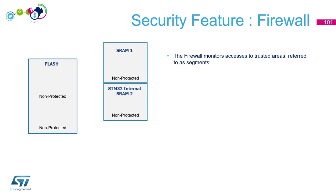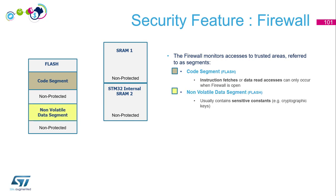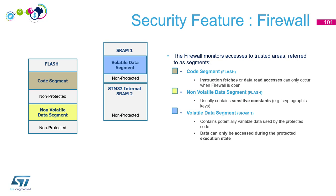The firewall monitors access to a trusted area that refers to segments — there are three of them. A code segment located in flash, where instruction fetch and data read access can only occur when the firewall is open. A non-volatile data segment also in flash, which usually contains sensitive constants like cryptographic keys. Then a volatile data segment located in SRAM1, containing potentially variable data used by the protected area. Data can only be accessed during the protected execution state.